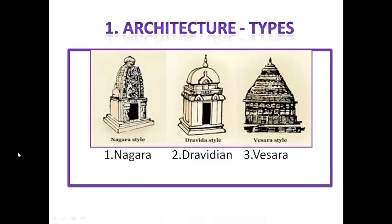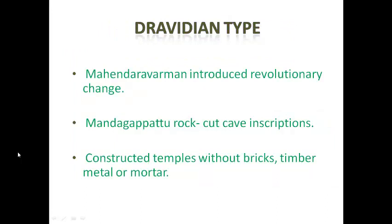First, we are going to see about Architecture. Architecture can broadly be divided into Nagara type, Dravidian type and Vesara type. Mahendra Varman introduced a revolutionary change in Dravidian architecture. He carved out temples from the living rocks. The Mandagapattu Rock Cave inscription says that Mahendra Varman constructed the temples without using perishable materials like bricks, timber, metal or mortar.